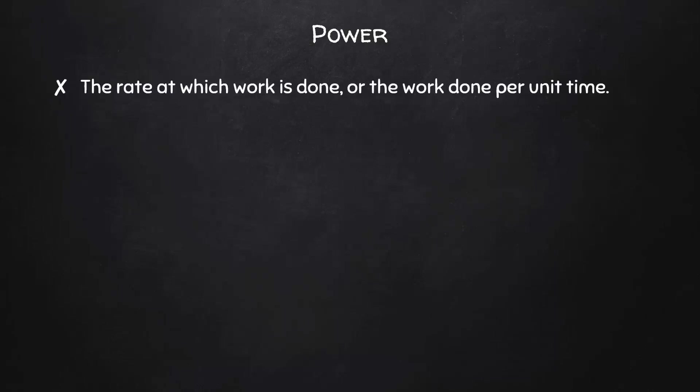Finally, let's take a look at power. Power is defined as the rate at which work is done, or the work done per unit time. In equation form, power equals work divided by time. Since work is force times displacement, we can rewrite this as power equals force times displacement over time. Displacement over time is average velocity, so we can also rewrite this as power equals force times average velocity.